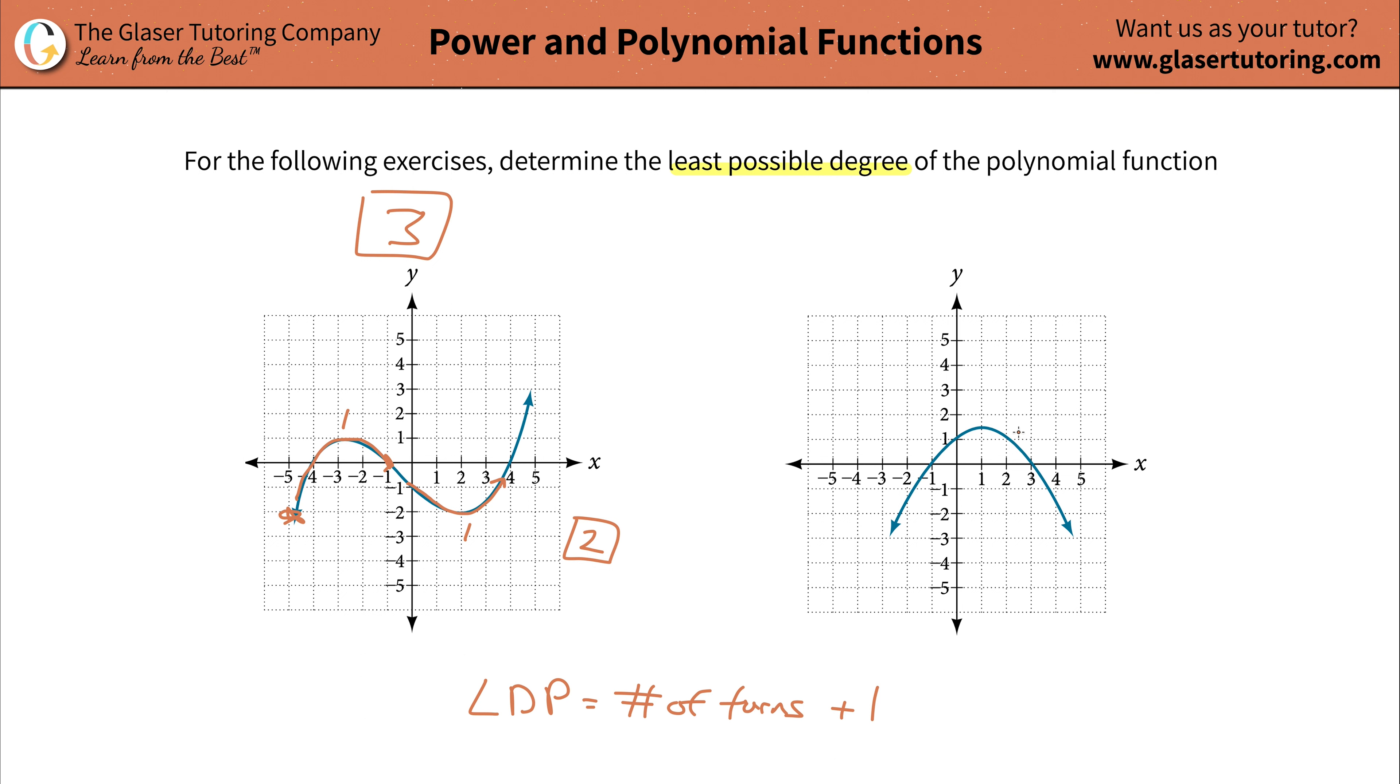Then, simple, take a look at the other one. How many turns are there? Just one. So take one, that's the number of turns, add one to it, what do you get? Two, so that's the least possible degree. Easy enough.